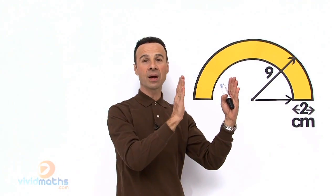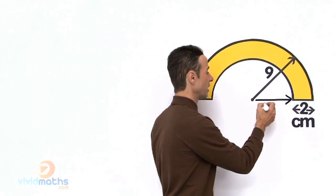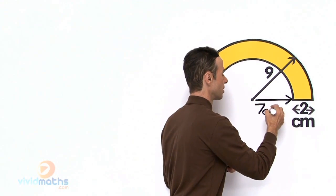So 9 take away 2 will leave us 7, so let us mark that in, so that is 7 cm.